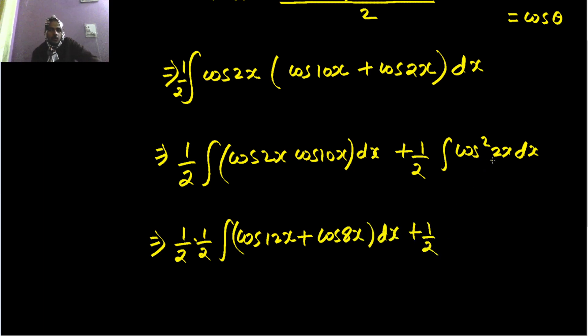Now cos square theta is 1 plus cos 2 theta divided by 2. So 1 plus cos—cos twice of this angle, that means 4x—divided by 2.